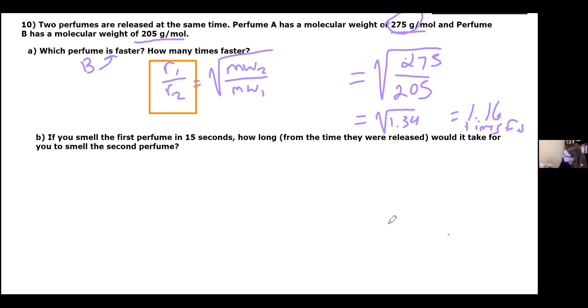Now, for part B, they tell us that the first perfume takes 15 seconds to get from the perfume bottle to your nose, essentially. We want to know how long, so how many seconds for the second perfume. Well, the first perfume is going to be the one that gets to our nose first, is going to be the one that moves faster.